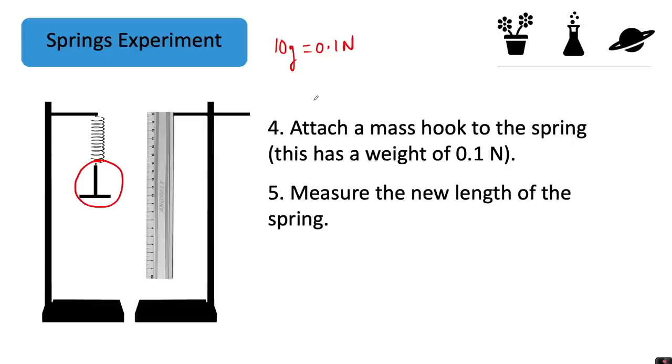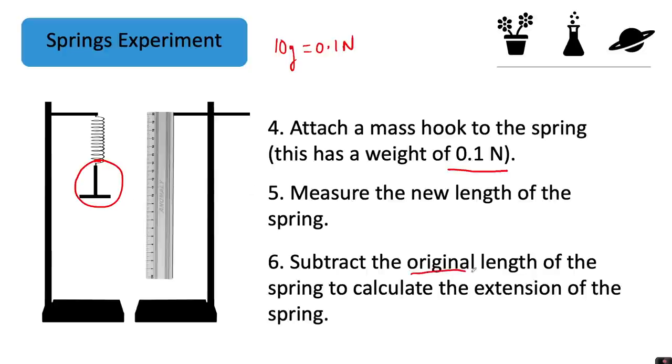You would then measure the new length of the spring now that we've applied this force of 0.1 Newtons pulling the spring downwards. You would then subtract the original length of the spring to calculate the extension of the spring.